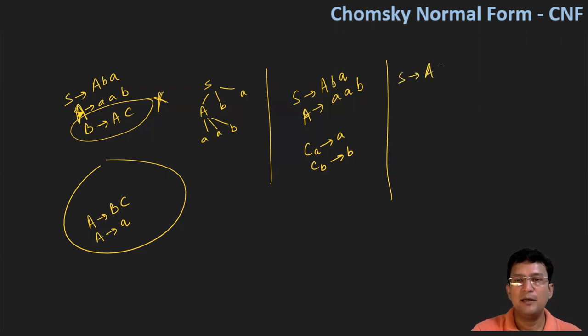So this is S produces capital A, C_B, C_A, and then A produces, let's say C_A, C_A, and C_B.